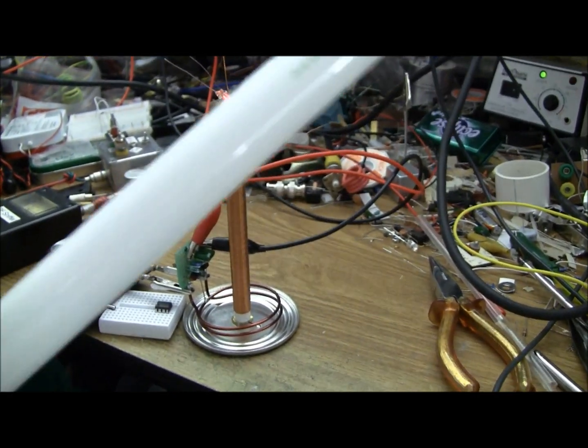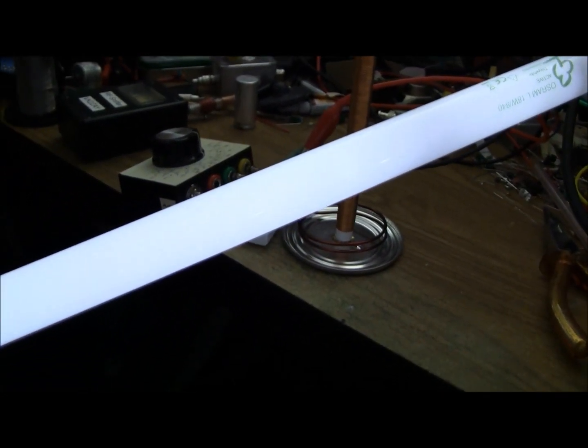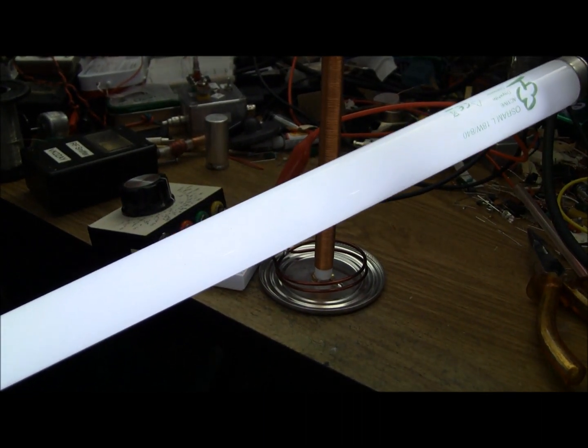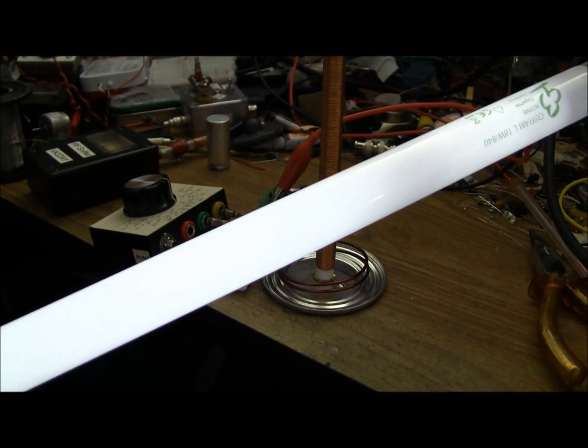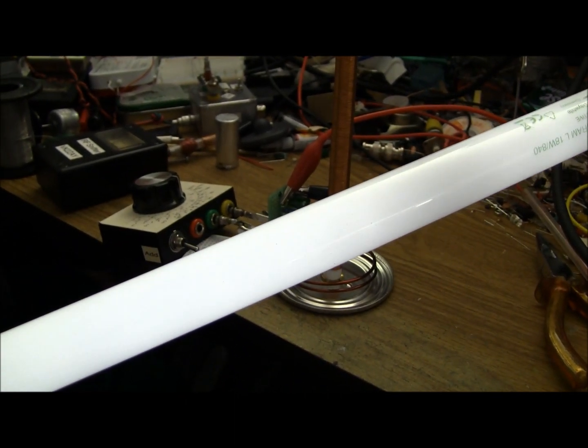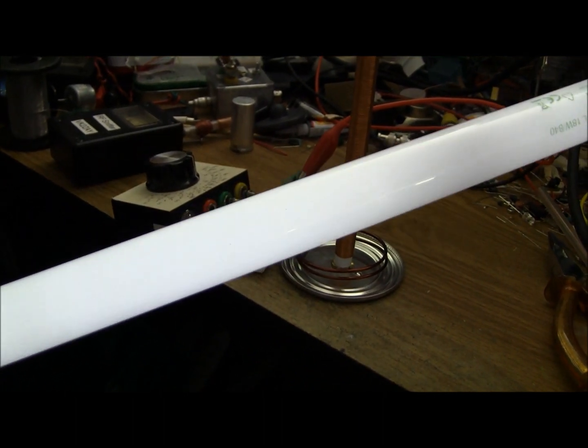Anyway what I did notice is that there's an interesting effect here with fluorescent tubes. I might have to put it in the dark so you can see it properly but when the glow gets quite weak this moving pattern occurs in the discharge.